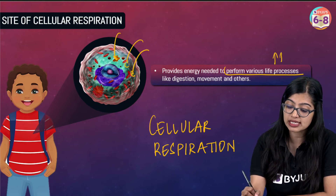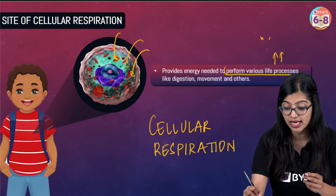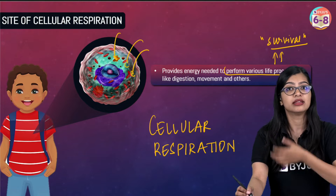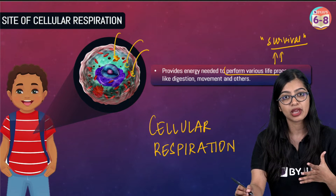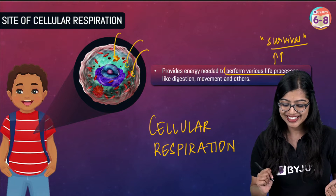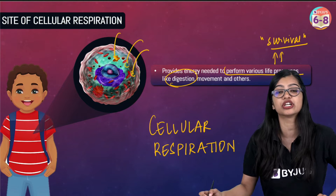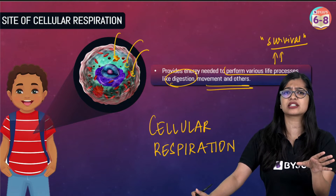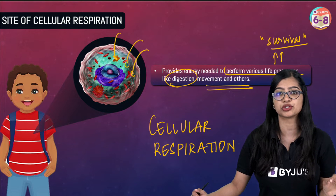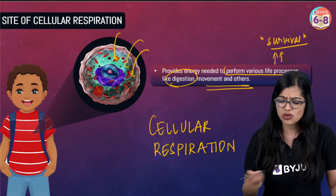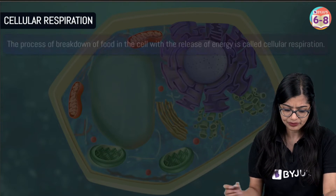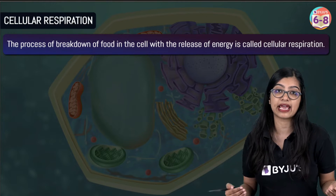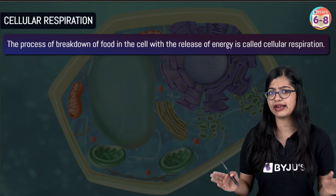The process of cellular respiration gives out energy that is required to perform various life processes. Life processes are those processes that are essential for survival — if these processes don't happen, we will not be able to survive as a living organism. These life processes include digestion, transportation, excretion, movement, and various physical activities. Cellular respiration can be defined as the process of breakdown of food within the cell to release energy.